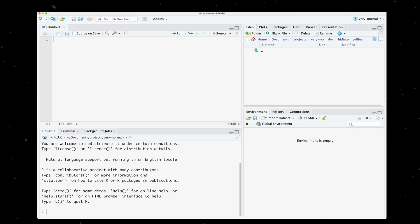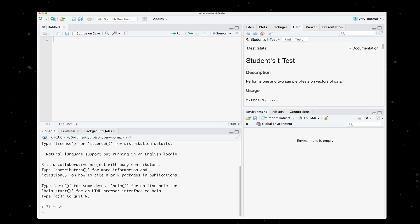To see how any function in R works, we can write the function in the console and prefix it with a question mark. Executing this command brings up the official documentation for that function.